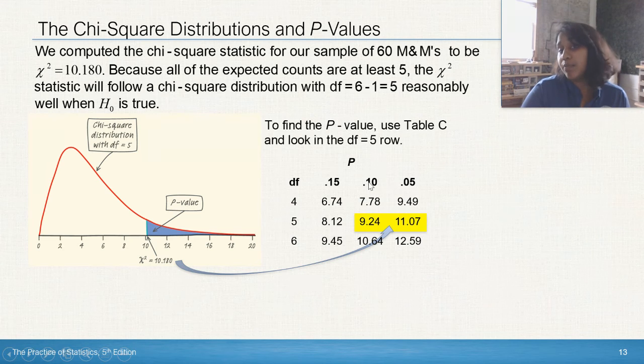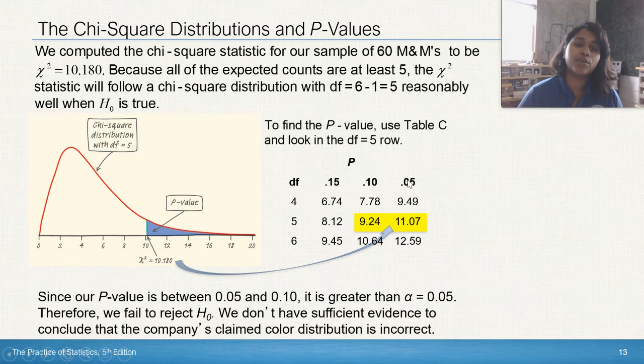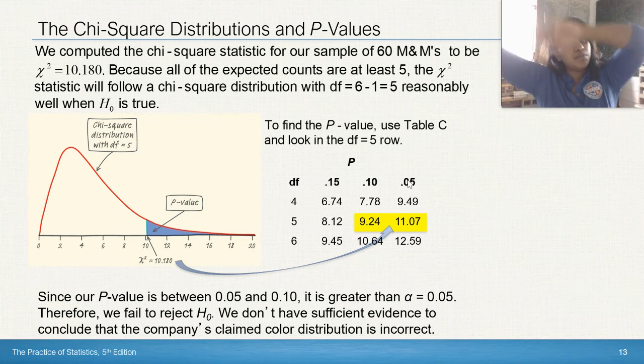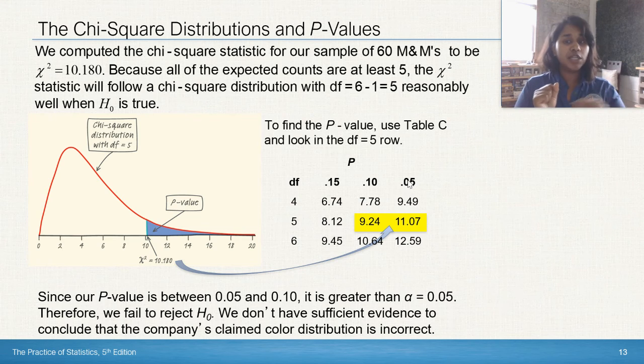So if you look at those p-values, we're not at 0.10 and we're not at 0.05. We don't know our specific number, but we sure know that we are between 0.05 and 0.1. And since that's greater than 0.05, we must fail to reject the null. Because remember, when our p-value is bigger than alpha, we fail to reject. When our p-value is less than alpha, we reject the null hypothesis.